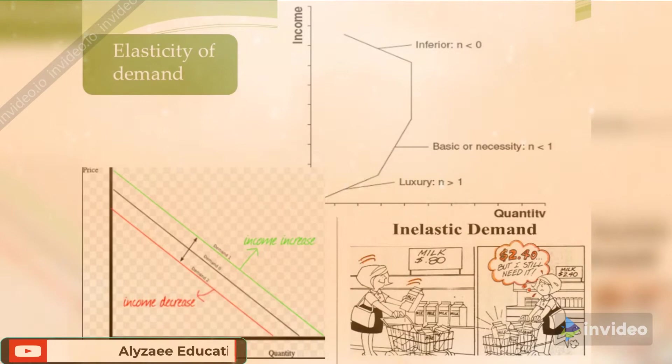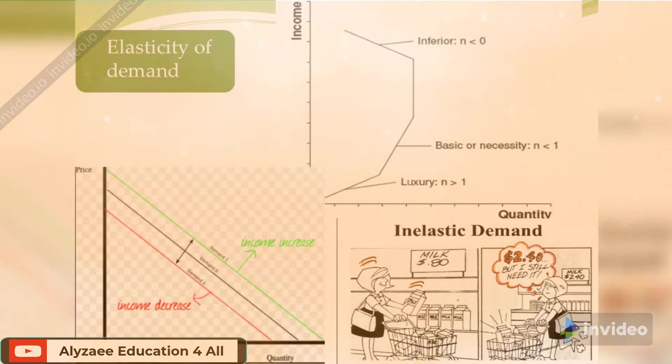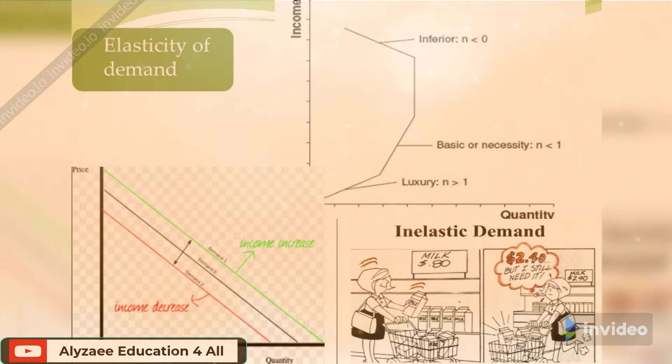So in elasticity of demand, inferior goods are those goods with a formula where n is less than zero. If luxury, n is greater than one, so the basic and necessity becomes in between zero and one.